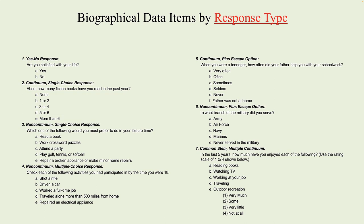I recommend that you use a response of one to indicate 'not at all' instead of four. A two should indicate very little, etc. You would do this so you don't have to reverse score the responses — higher numbers should represent more of something, not less of it.